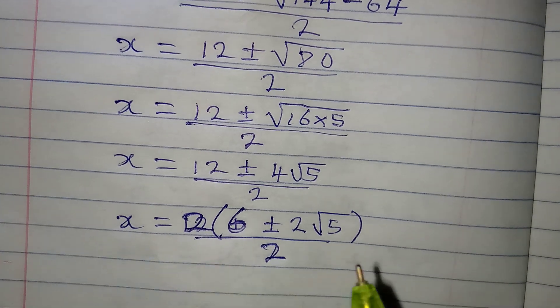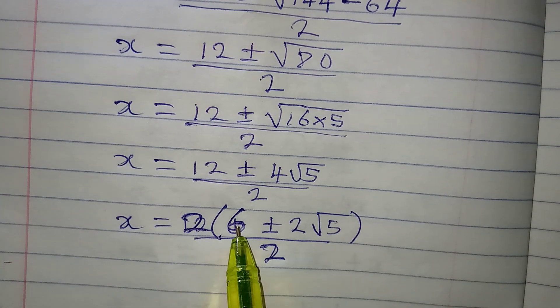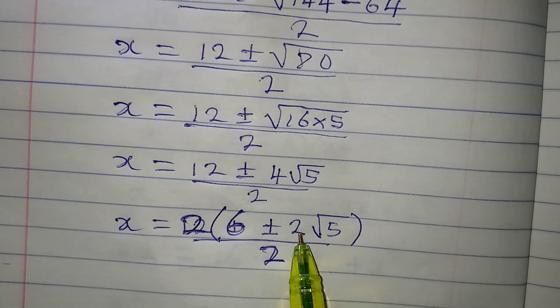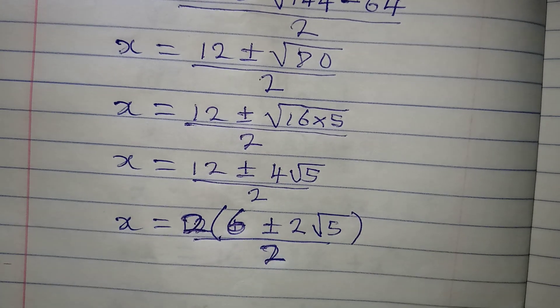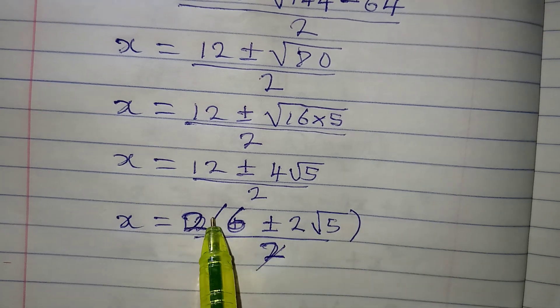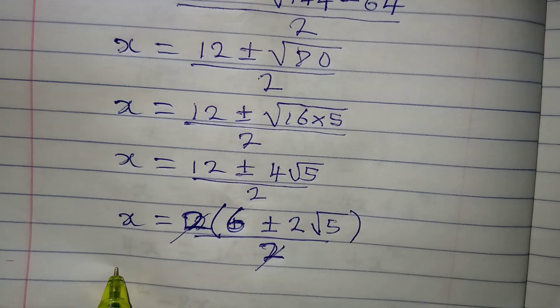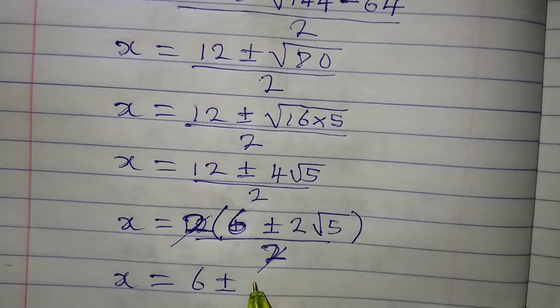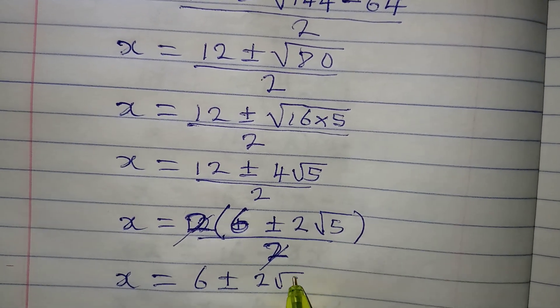If you want to be sure, you can open the bracket again. 2 times 6 is 12, then 2 times 2, that will give us the 4 over there. Now, this can cancel this, and this means that our x is equal to 6 plus or minus 2 square root of 5.